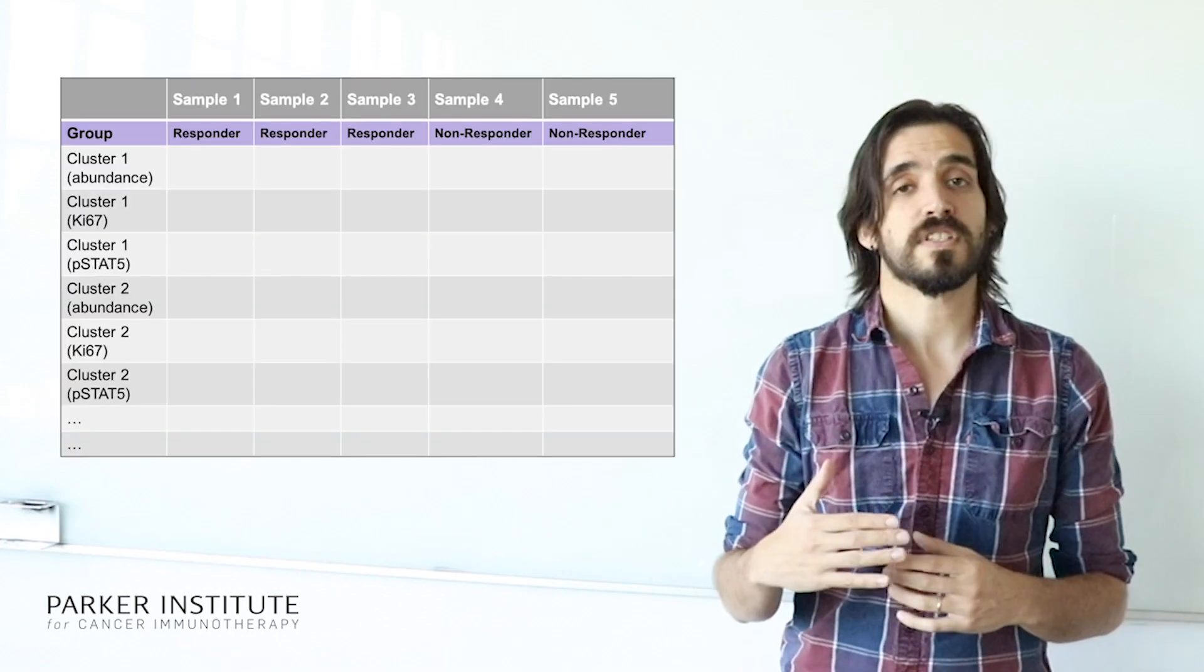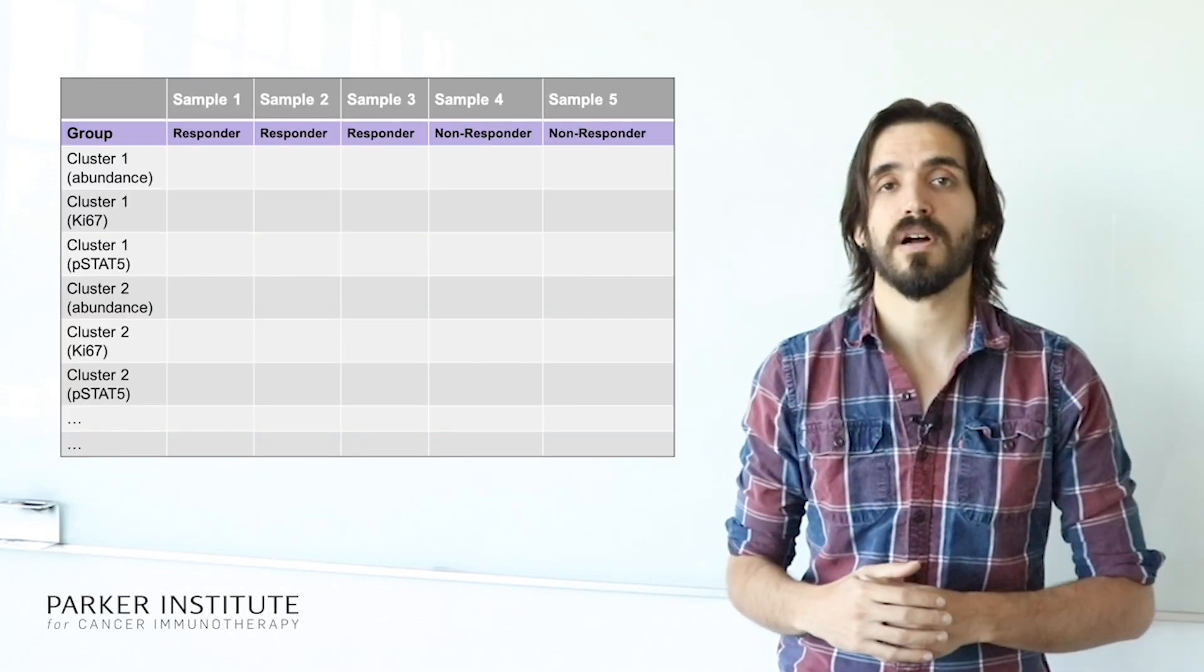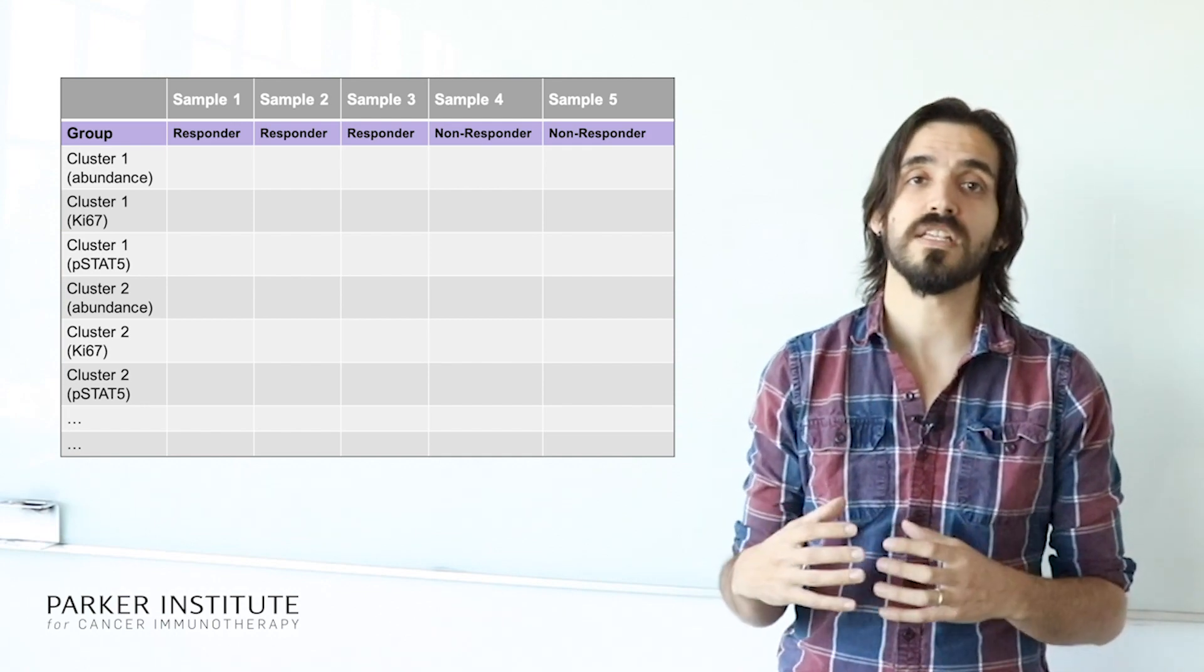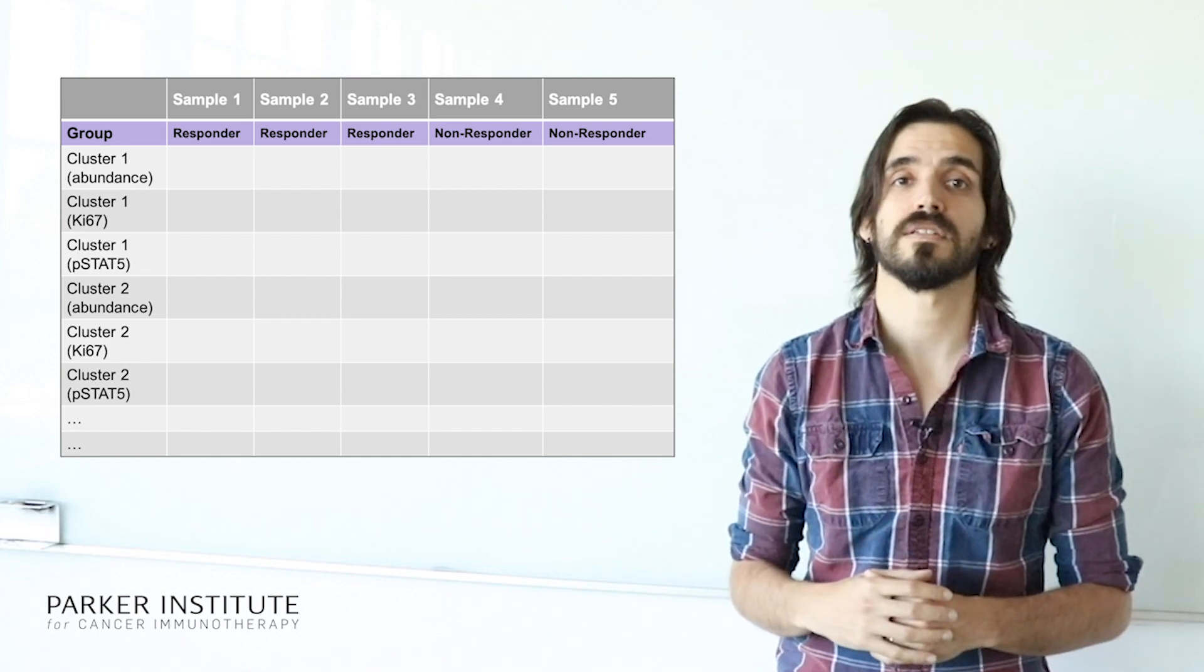Also, the features that you use for your clusters don't have to be limited to just the abundance of the cluster in a specific sample. For instance, say that you have also collected functional markers in your panel, such as Ki-67 or STAT5, then you can use these to inform the properties of your clusters.